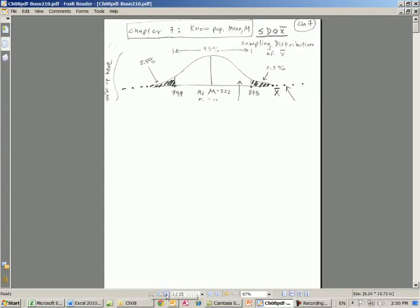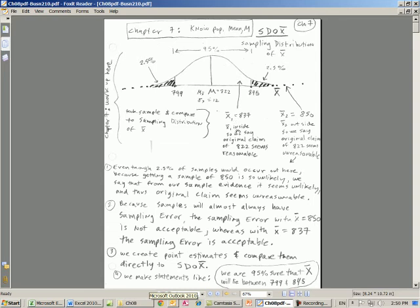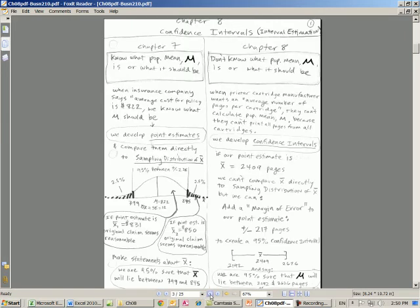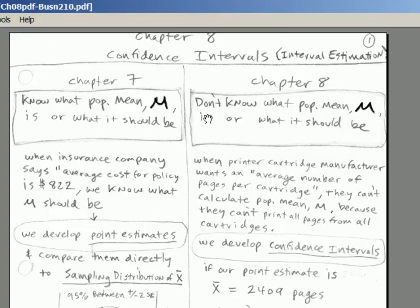Notice something here. There's our x-bar of 837 bucks, but we're not directly comparing it to our sampling distribution of x-bar. However, we are going to use the same techniques, Excel techniques and probability techniques, that we learned in chapter 7. We can imagine that there was a bell-shaped curve over here, and we'll use all the same techniques. But technically, we're not measuring it up against this sampling distribution, because we just don't know what mu is.